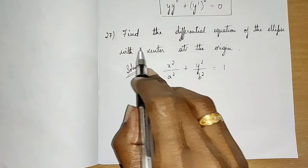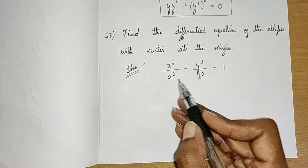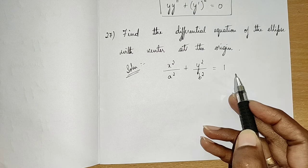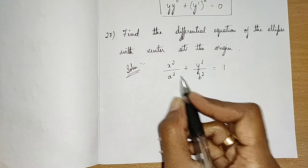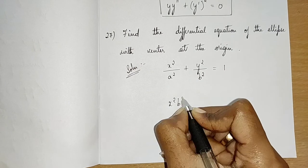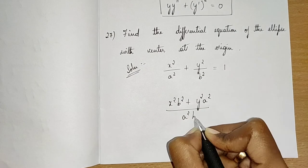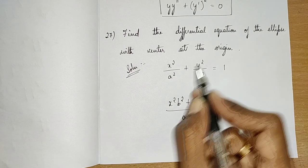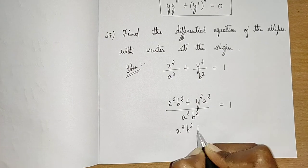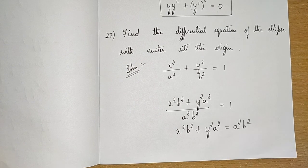Our next question is: find the differential equation of the ellipse with center at the origin. The equation is x²/a² + y²/b² = 1. We make it into a single line by cross-multiplying: x²b² + y²a² = a²b².